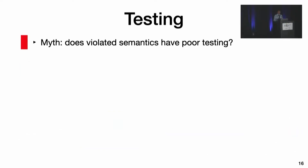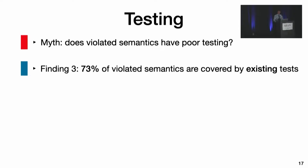The findings so far might suggest these systems have poor testing, so the semantic violations are repeatedly occurring. That's not the case — developers do add tests. In 73% of cases, at least one test case covers the valid semantics. But these tests did not expose the violations.